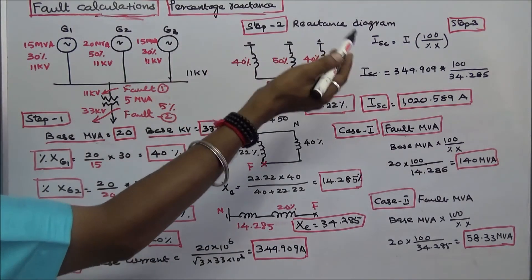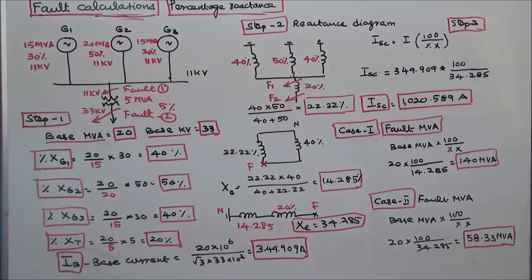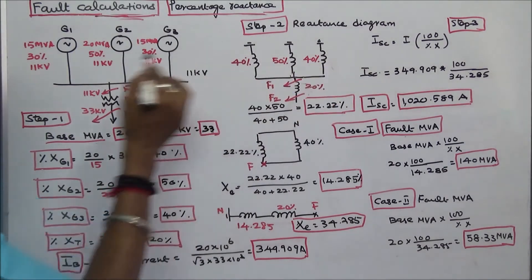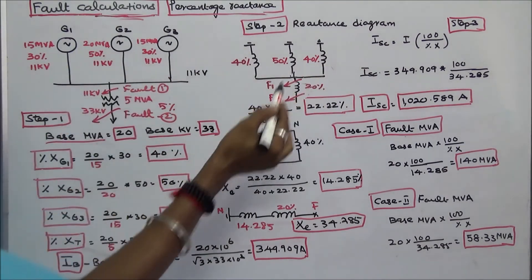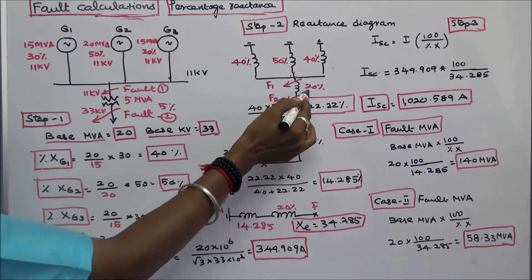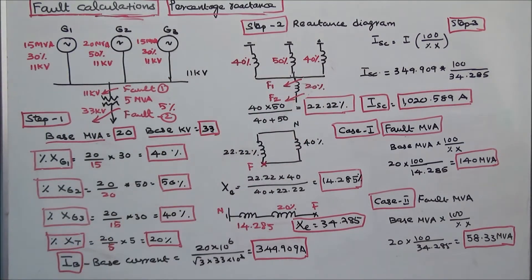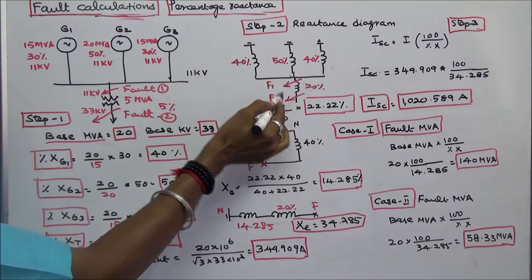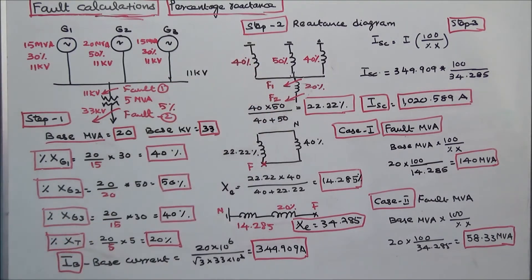Second step, I draw the reactance diagram. These three are the generator reactances, and 20% is the transformer reactance. This is the neutral point, this is fault point F1, and this is fault point F2.